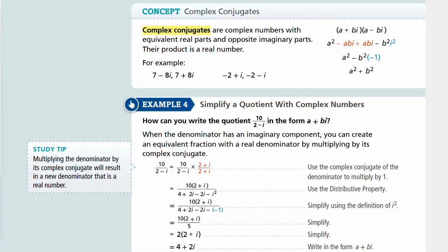For lesson 2-4, Complex Numbers and Operations, we will talk about complex conjugates and look at the next example. Complex conjugates are complex numbers with equivalent real parts and opposite imaginary parts.